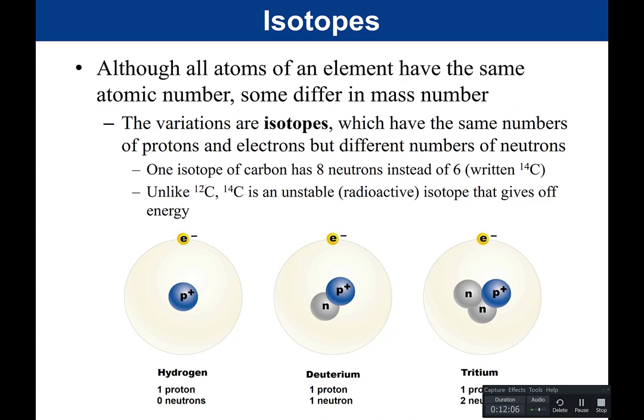Unlike carbon-12, carbon-14 is unstable or radioactive. This radioactive isotope gives off energy — it's unstable and it decays over time. One of the advantages of having these radioactive isotopes is that in medicine, they can be used as tracers because the cells can't differentiate between isotopes. To a cell, carbon is carbon, whether it's carbon-12 or carbon-14. We can use these radioactive isotopes as a way to measure where an element is being used in the body.